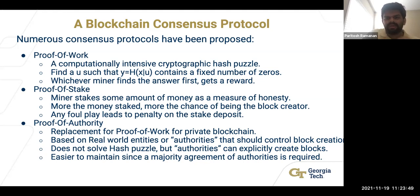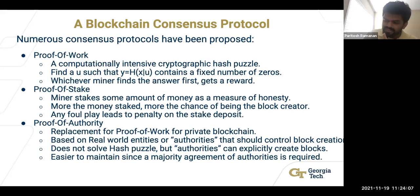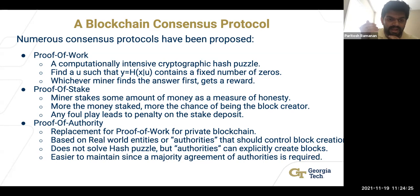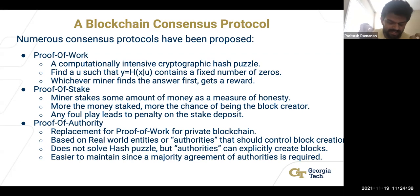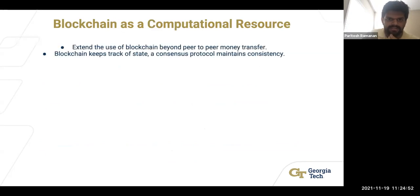Proof of Work and Proof of Stake are for public blockchains where anyone can join. Proof of Authority is applicable to private blockchains where you can guarantee the identities of all parties. In that setting, you can eliminate the compute-intensive tasks of Proof of Work. By shifting trust onto real-world identity, Proof of Authority gets rid of those intensive tasks and is usually easier to maintain.